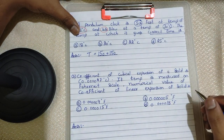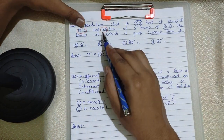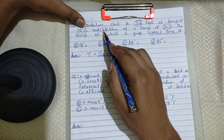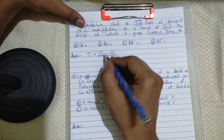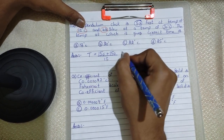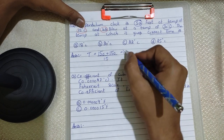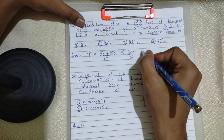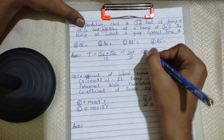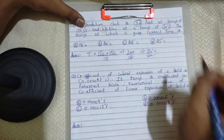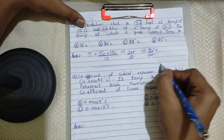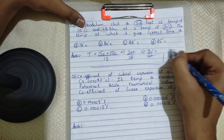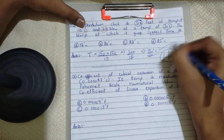Now divide both numbers by the sum of the times. What is 10 plus 5? It is 15. So 150 plus 150 is 300, divided by 15 equals 20 degrees Celsius. In just one line, you got the answer!